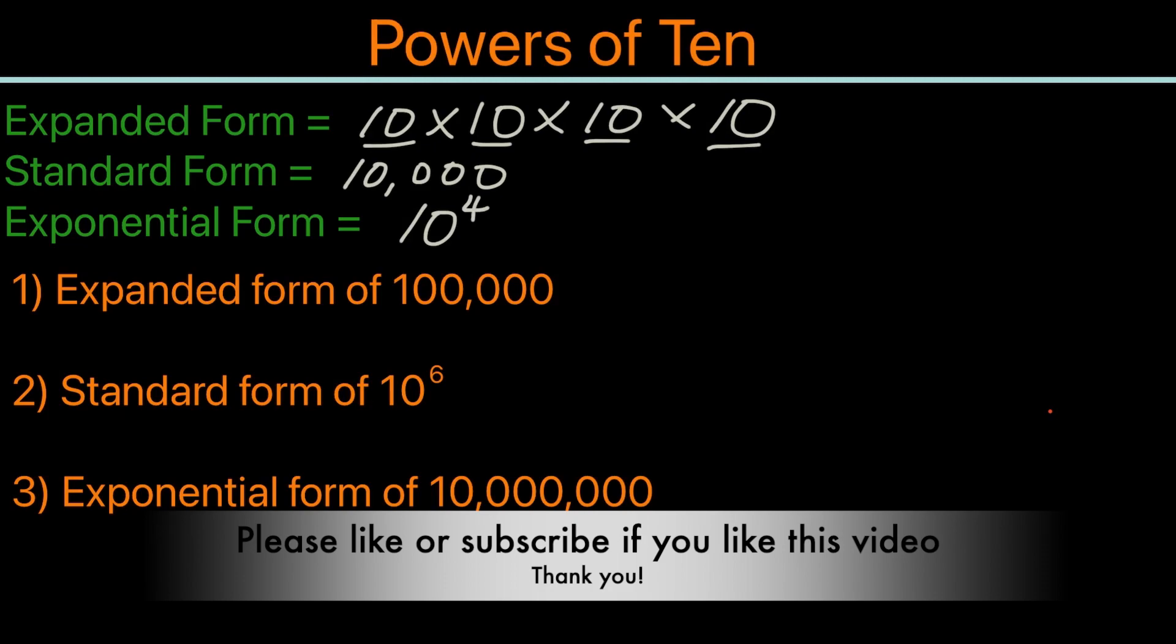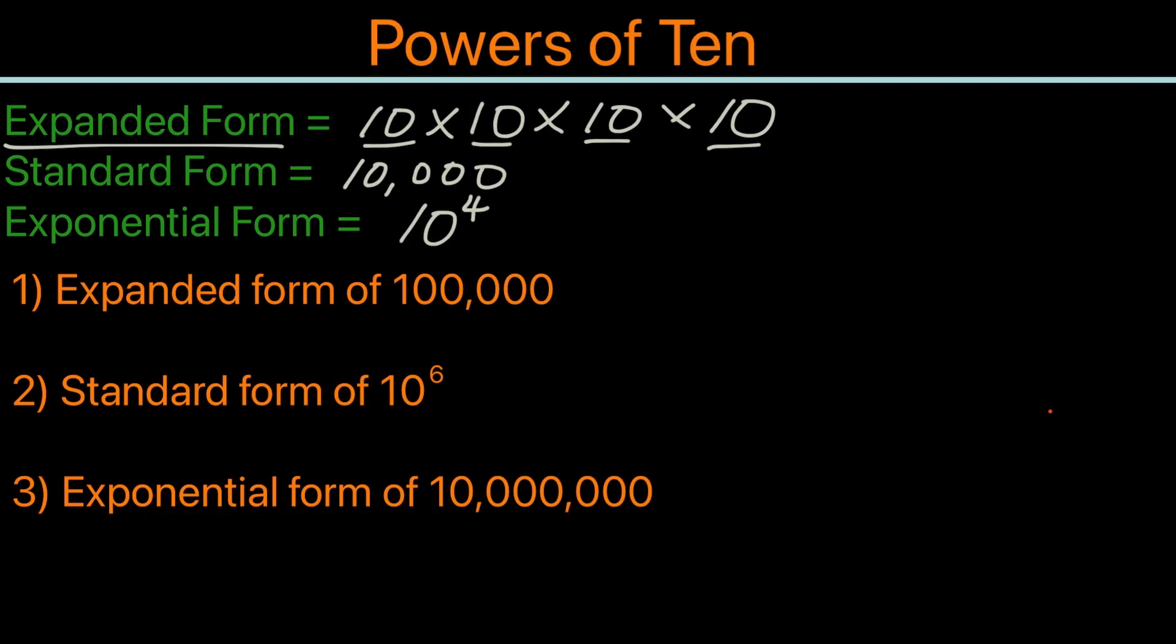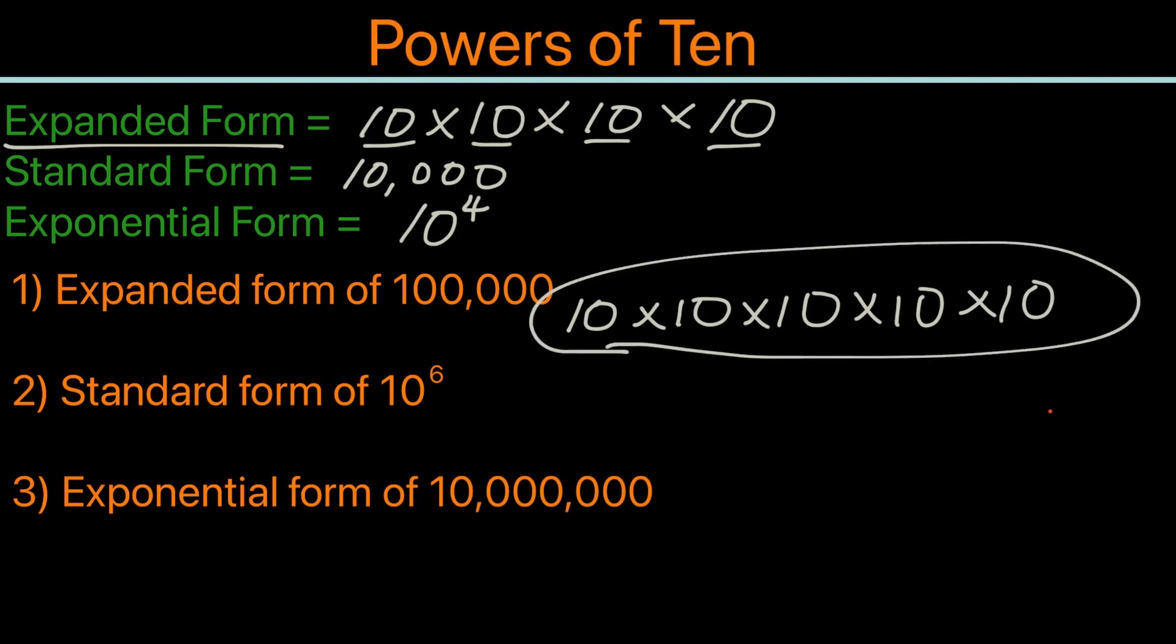The first one: expanded form of 100,000. We know the expanded form requires multiple tens times by each other, so let's see how many we need to reach 100,000. That would be 10 times 10 times another 10 equals 1,000, another 10 equals 10,000, another 10 equals 100,000. So that would be the answer for the expanded form of 100,000.